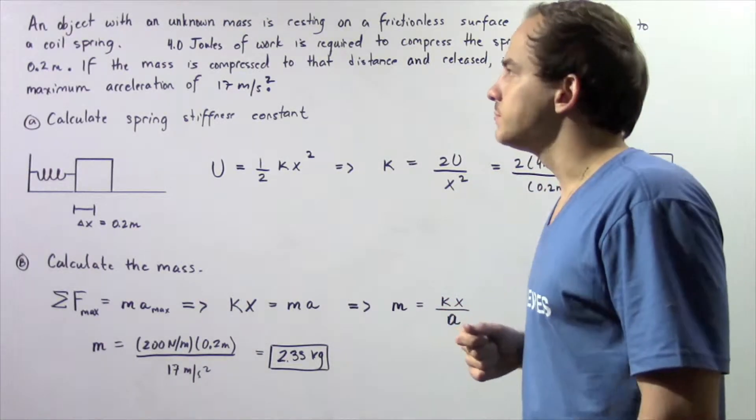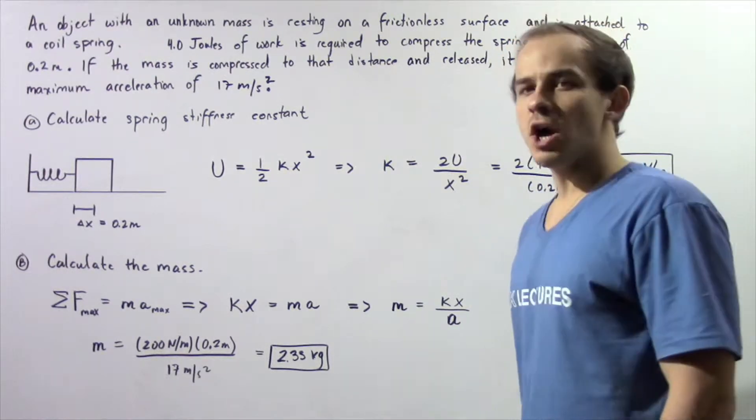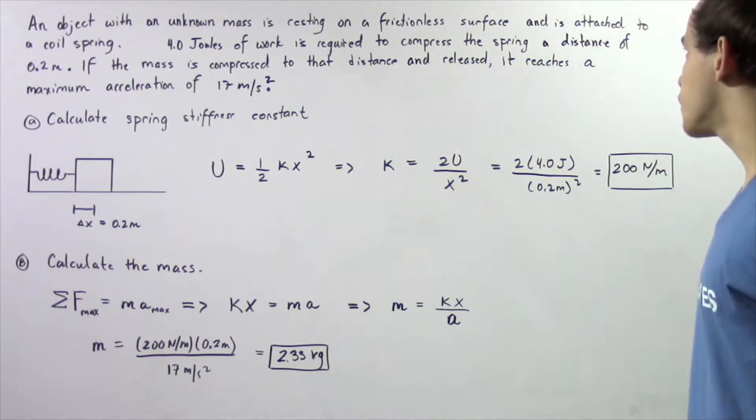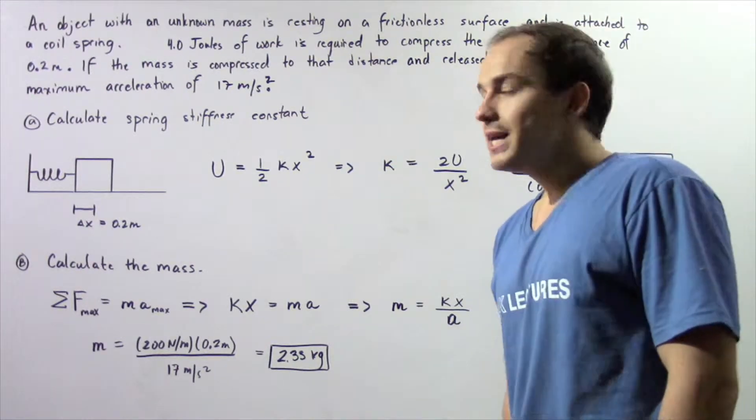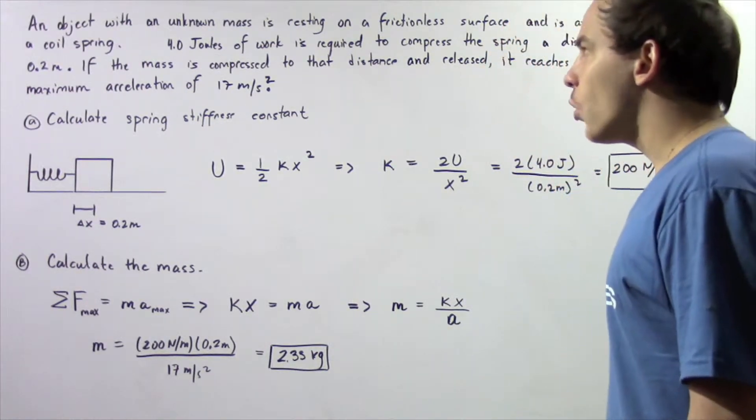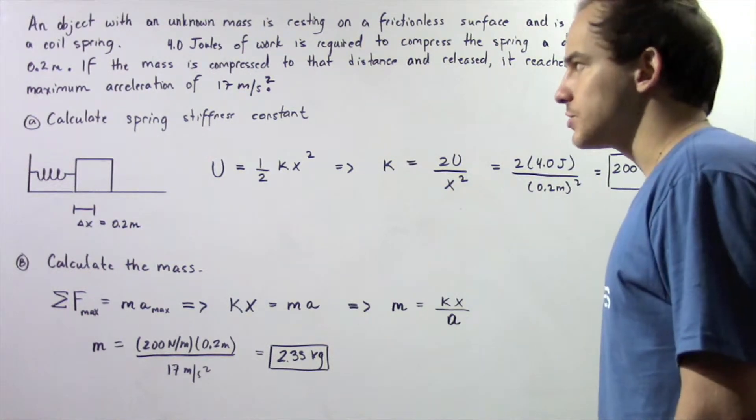Let's look at the following example. Suppose an object with an unknown mass is resting on a frictionless horizontal surface and is attached to a coil spring.